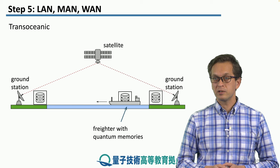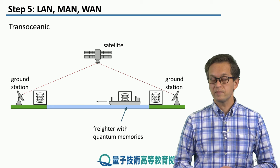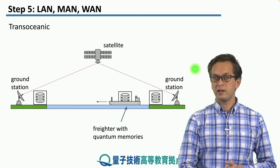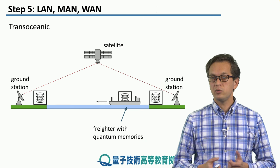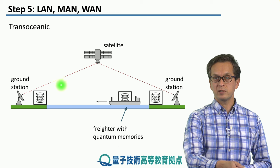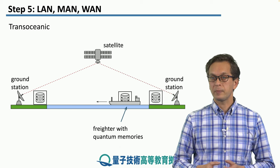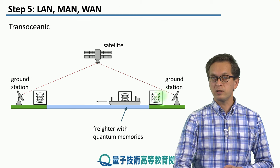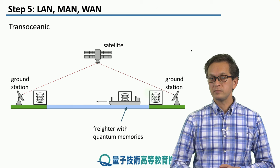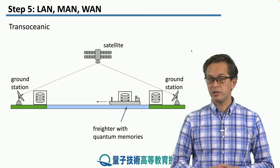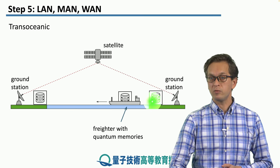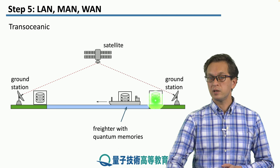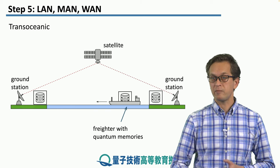The last type of network we're going to mention are trans-oceanic networks — another type of wide area network. Here, if you imagine one continent over here and another continent over here, you can use, for example, satellite connection that distributes entangled pairs to ground stations located on the continents. Or, as we saw in previous lessons, you can employ freighters transporting expensive quantum memories to implement a sneakernet. In this case, we've got quantum memories on one continent, another bunch of quantum memories on the other continent, and a freighter that moves one and a half of Bell pairs between them, establishing entangled connections.